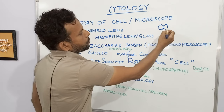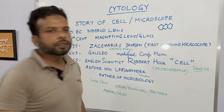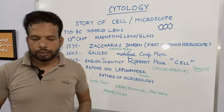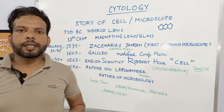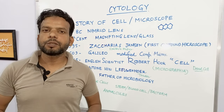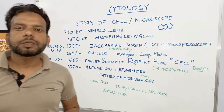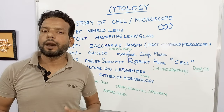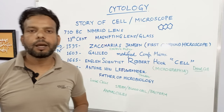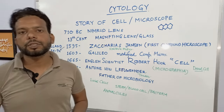He looked at cork with his compound microscope and observed its structure. He coined the term 'cell' because the compartments he saw resembled the small rooms where monks and nuns lived. So the word 'cell' was the first term coined by this English scientist, whose name is Robert Hooke.